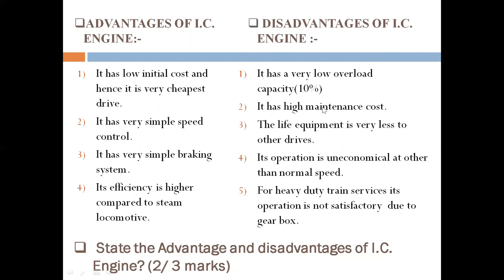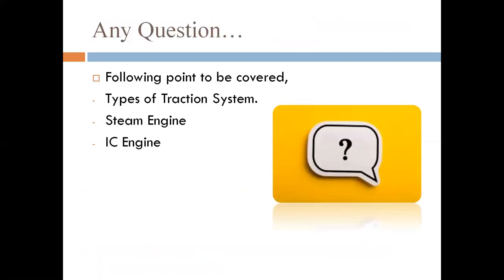Disadvantages of the IC engine: it has very low overload capacity, high maintenance cost, and the life of the equipment is very less. Operation is uneconomical at other than normal speed — just like a bike driven at high speed becomes inefficient. For heavy-duty train service, its operation is not satisfactory due to the gearbox. Topics covered include types of traction system, steam engine, IC engine, advantages of IC engine, and main features of the steam engine. Thank you very much.